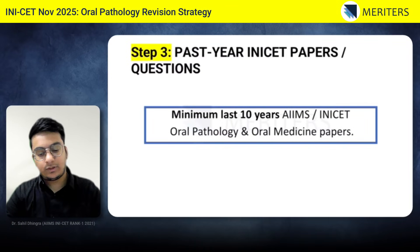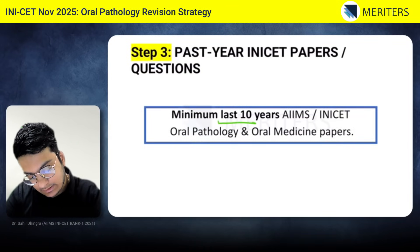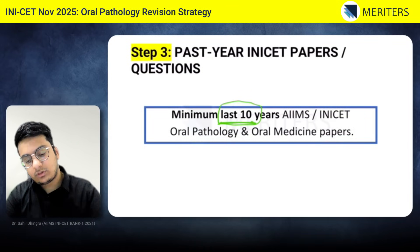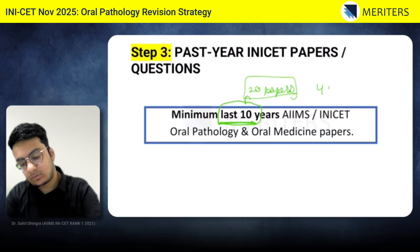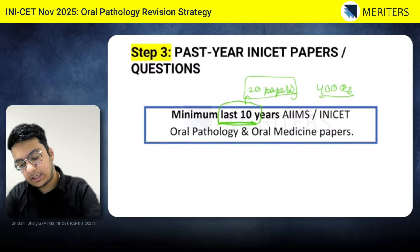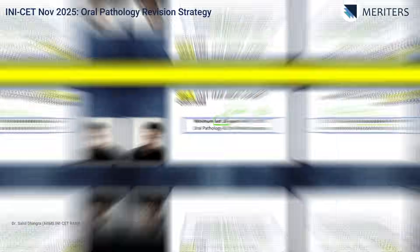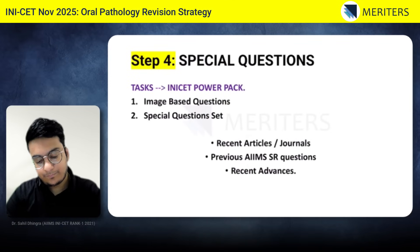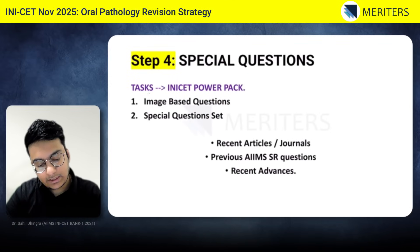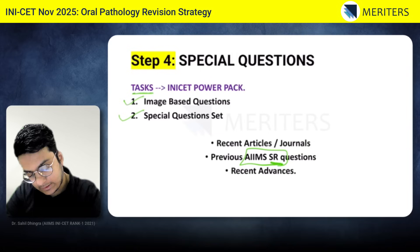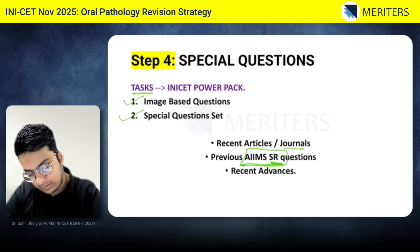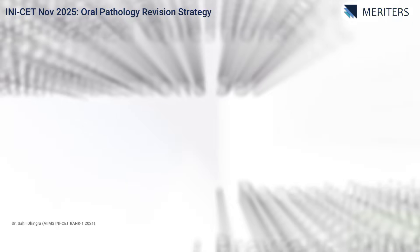Step three is your past year papers. You must do a minimum of the last 10 years' papers — around 20 papers, giving you roughly 400 questions, since around 20 to 22 questions are asked each year. Also use the special question set in your NICT power pack, which covers image-based questions, previous year SR papers, and recent articles, journals, and recent advances.